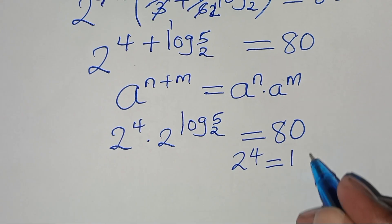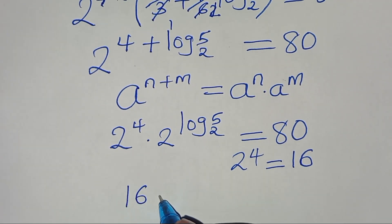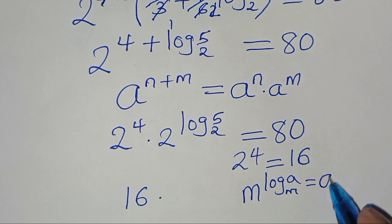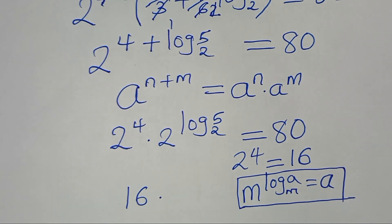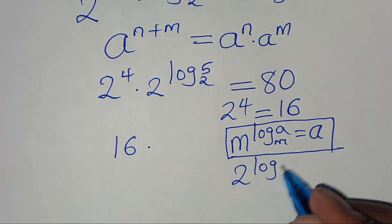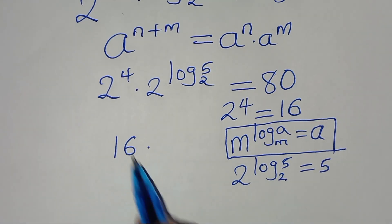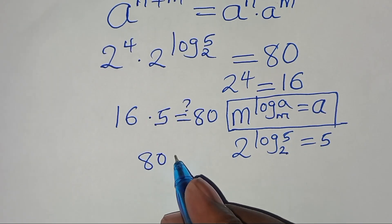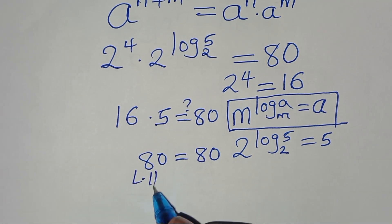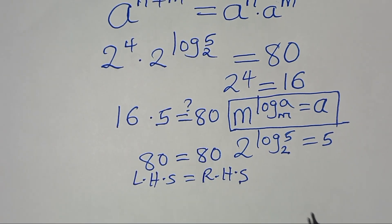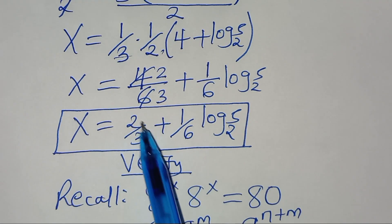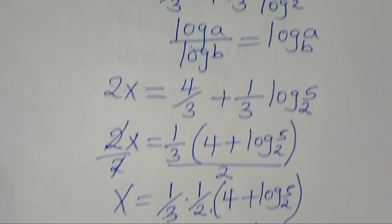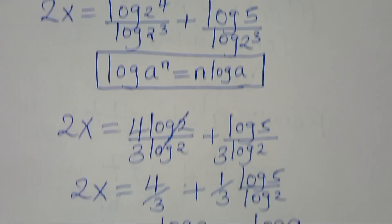Now 2 to the power 4 equals 16, so we have 16 times 2 to the power (log base 2 of 5). This is in the form of m to the power (log base m of a), which equals a. Applying this logarithm property, 2 to the power (log base 2 of 5) equals 5, so we have 16 times 5, which equals 80. The left-hand side equals the right-hand side, confirming that x equals 2 over 3 plus (1 over 6) log base 2 of 5 satisfies the equation. Please like this video and subscribe.